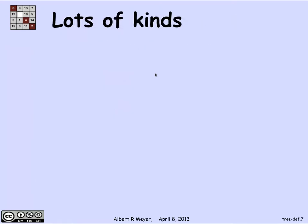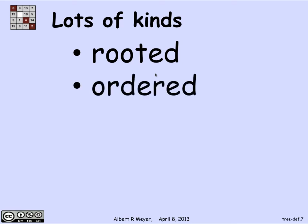In addition to these places where trees come up, there are a lot of different kinds of trees. There are rooted trees where there's some designated vertex called the root and you think of getting to all the other vertices from the root. There are ordered trees where, when you're at a given vertex, there's a distinct order in which you traverse the exit edges from that vertex — a first one, second one, third one, or a left one and the next leftmost — so there's an order in which you can choose to leave the vertex.